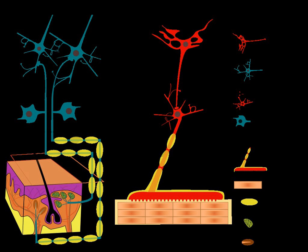Motor control is the regulation of movement in organisms that possess a nervous system. Motor control includes reflexes as well as directed movement. To control movement, the nervous system must integrate multimodal sensory information, both from the external world as well as proprioception, and elicit the necessary signals to recruit muscles to carry out a goal.